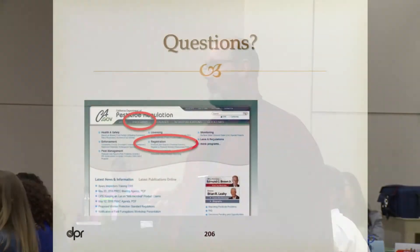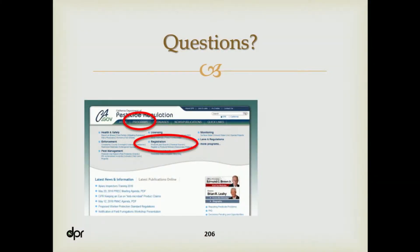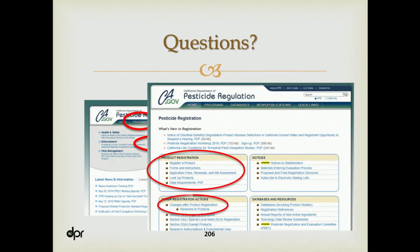And our website has plenty of information — it's a great place to find it. Go to the Programs tab on our home page, hover over that for a drop-down menu. Second row, second column, second one down is registration. Click on that. It's going to lead you to another page with six boxes with ten headers. All the information we've covered today is right there on our website.